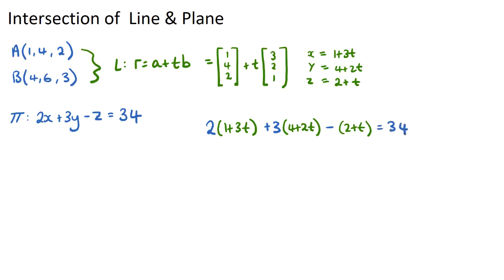Now what we have is an equation in terms of t, so we can solve for that value of t and that will be the parameter for when this intersection occurred. So let's expand this whole equation here: we'll get 2 plus 6t plus 12 plus 6t minus 2 minus t equals 34.